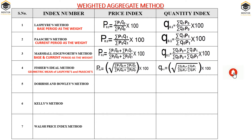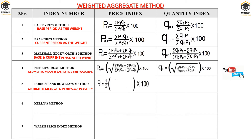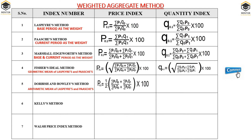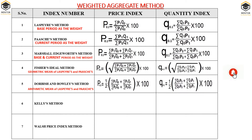Next we have Bowley's method. Here the author takes the arithmetic mean of Laspeyre's and Paasche's. The combination of Laspeyre's and Paasche's formulas divided by 2 gives Bowley's formula. So the price index under Bowley's is the Marshall-Edgeworth formula divided by 2 — i.e., the arithmetic mean. The same applies to the quantity index in Bowley's method.